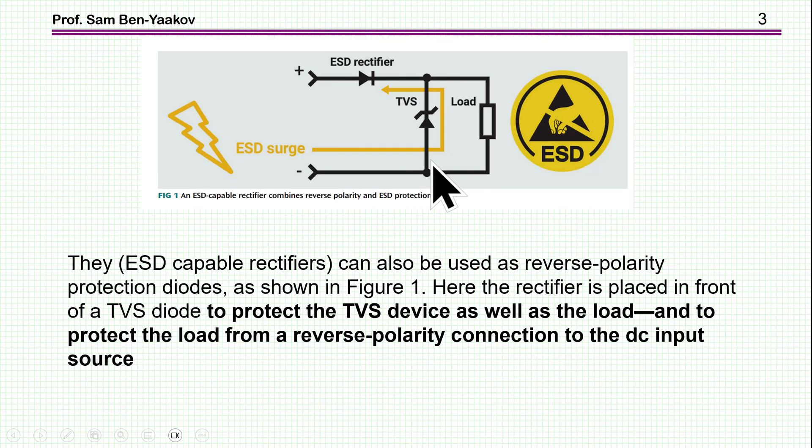Here are some examples given in this article. Here we see a TVS protecting a system, and here is a rectifier, but this is the ESD-capable rectifier. It says that the ESD-capable rectifier can also be used as a reverse polarity protection diode. Any diode can be used, of course, but as shown in Figure 1, here the rectifier is placed in front of the TVS diode to protect the TVS device as well as the load, and to protect the load from reverse polarity connection to the DC input source. So it is sort of protecting the TVS.